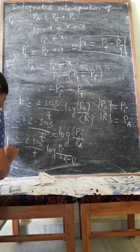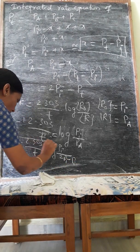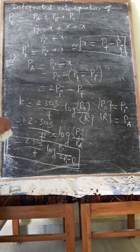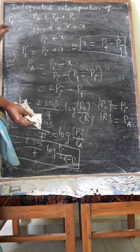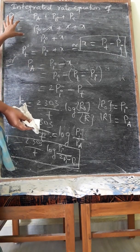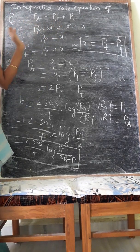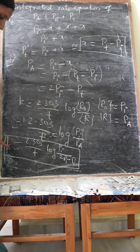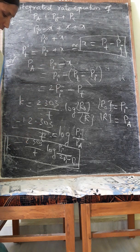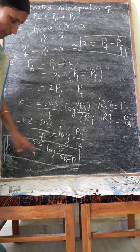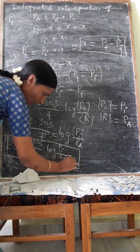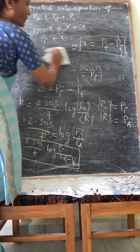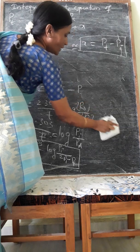This is the integrated rate equation for a first-order gas phase reaction: K equals 2.303 by T, log(PI divided by (2PI minus PT)). Consider reaction A giving B plus C, all in gas phase. Among the three derivations covered, the first two are most important, and either the zero-order or first-order integrated rate equation is a fixed exam question.